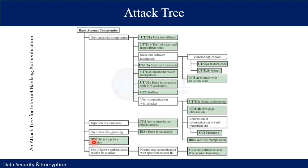IBS stands for Internet Banking Server. These types of attacks are offline attacks against the servers hosting applications such as internet banking. Looking at the overall description of the attack tree, bank account compromise is divided into five subcategories.